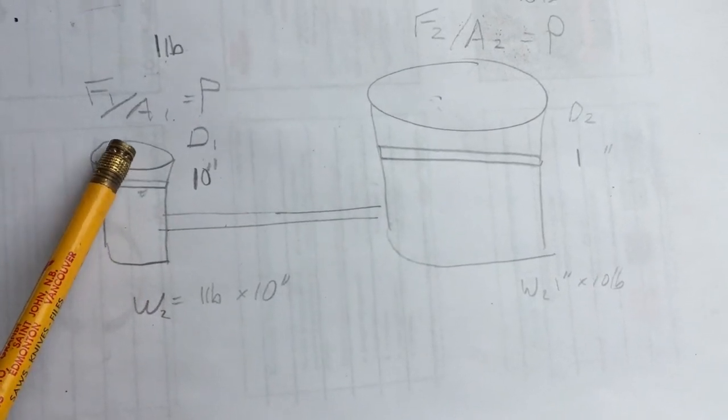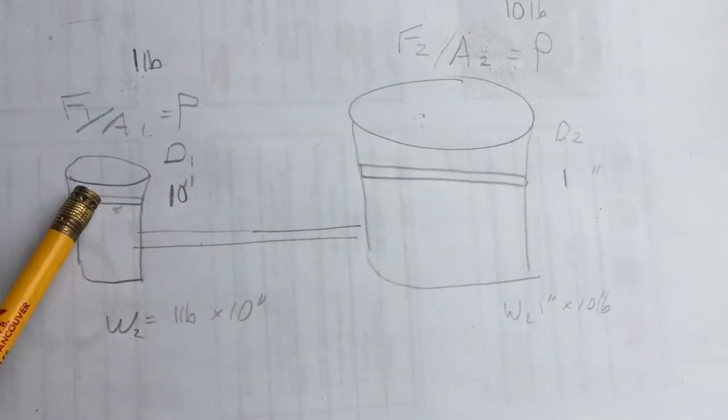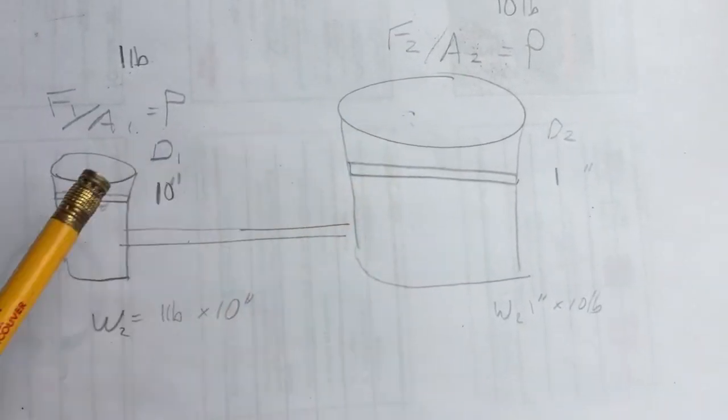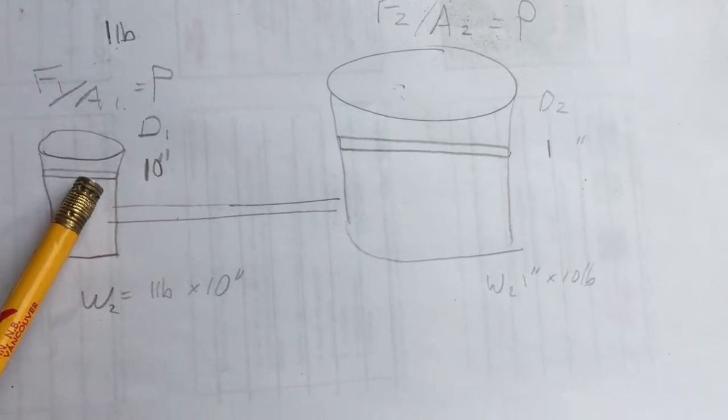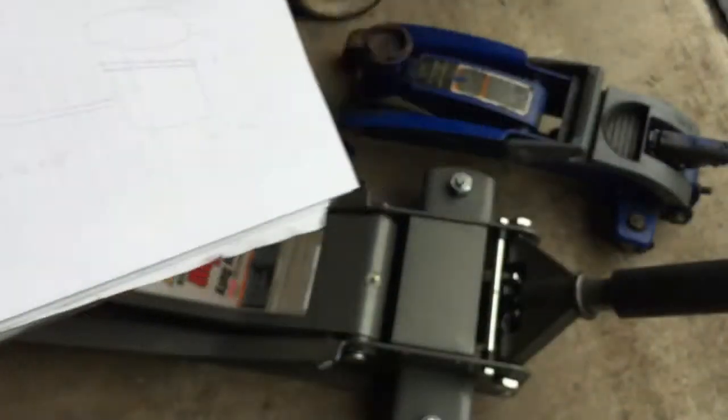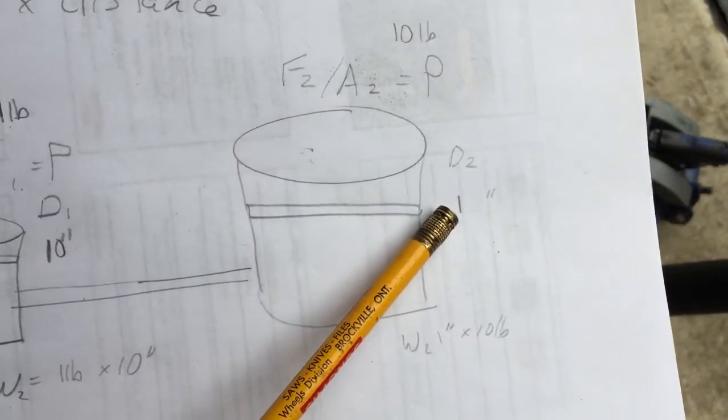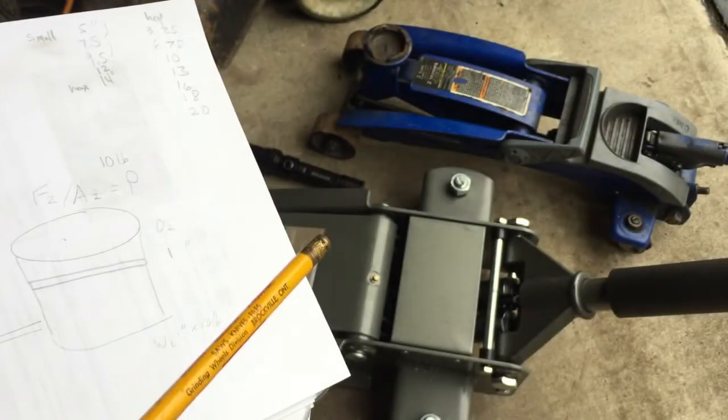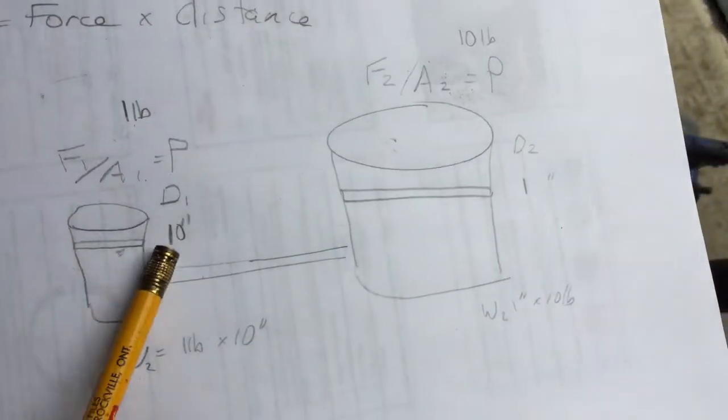If this is 10 times bigger than this, you get a 10 times force multiplication, but for every 10 inches you press on your handle here, it only moves one inch. So what I think the Harbor Freight rapid pump does is this is not as small as other jacks.